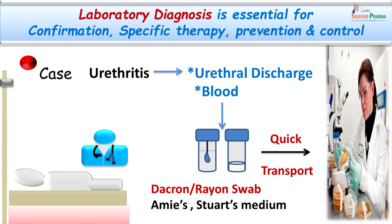Urethral discharge was collected on a sterile swab and transported to the laboratory immediately. A blood sample was also collected to carry out any required serological tests. We have to keep in mind that the organisms involved in this condition are particularly fastidious and delicate. It is important to note that samples should be collected on swabs other than cotton swabs, because cotton swabs can have toxic effects on the organisms and decrease their yield.